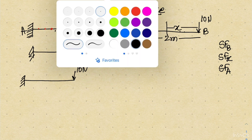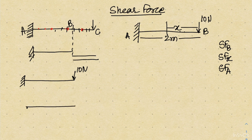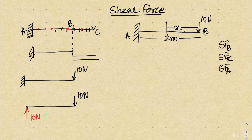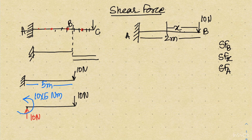We will also understand what is the reaction at the support end and why it is required. In case of a cantilever beam, suppose a load of 100 newton is acting and this is a fixed end. If I make the free body diagram, the support will provide a force of 100 newton upward. In addition, because of this support there will be a couple acting counterclockwise, and if the length of the beam is 5 meters this couple will have a value of 500 newton-meter.